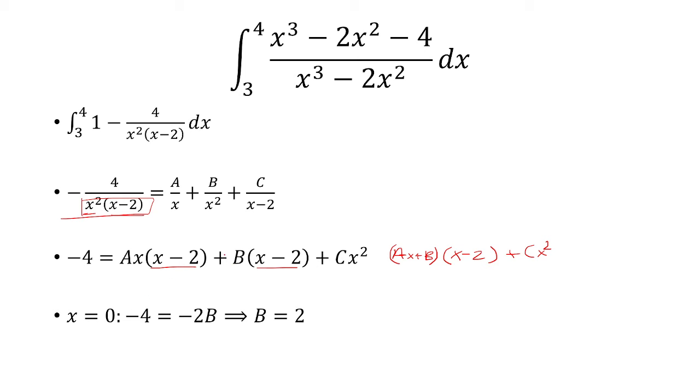So let's see, if I plug in x equals 0, this c is gone, and so is this a. So we're left with b times negative 2. And that's equal to negative 4, so b has to be 2.